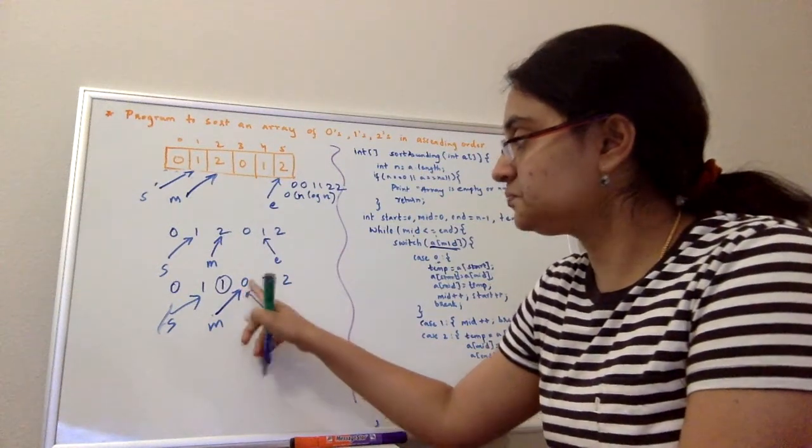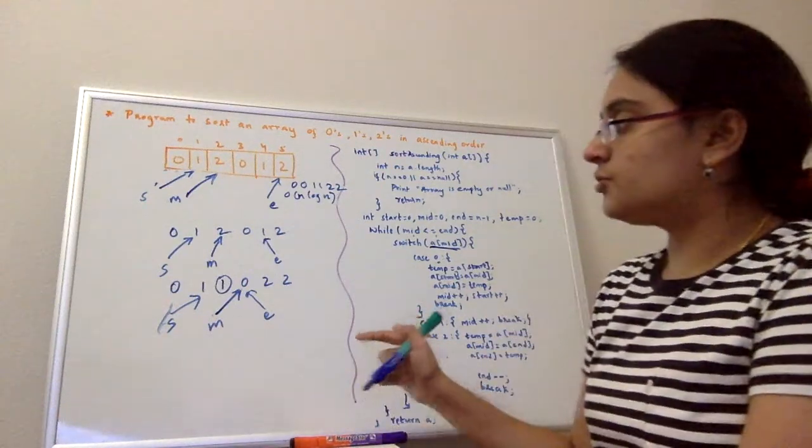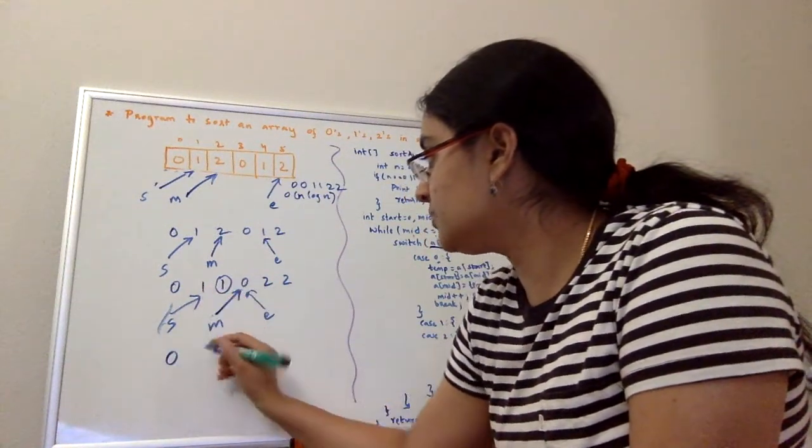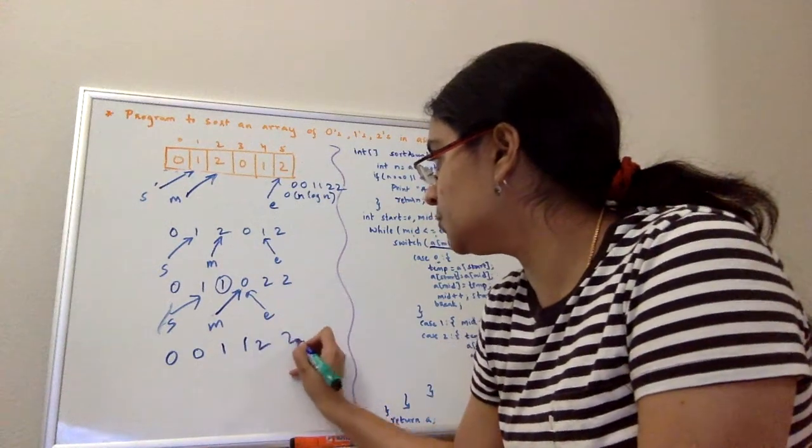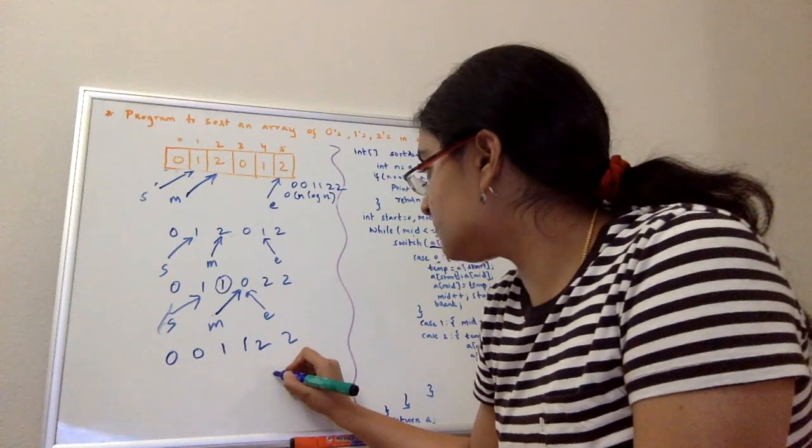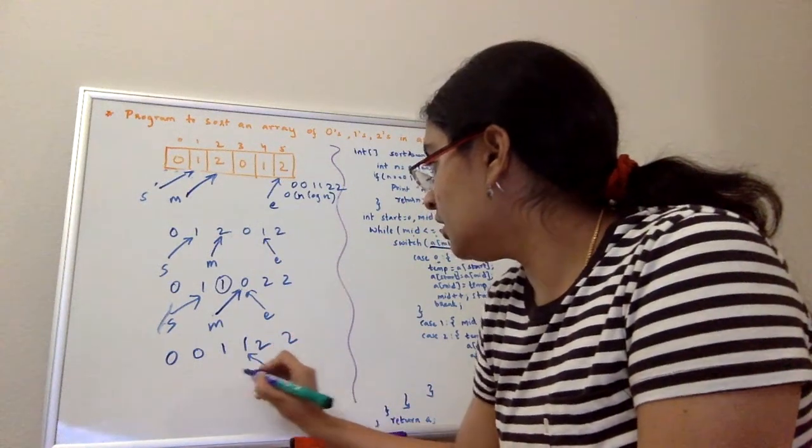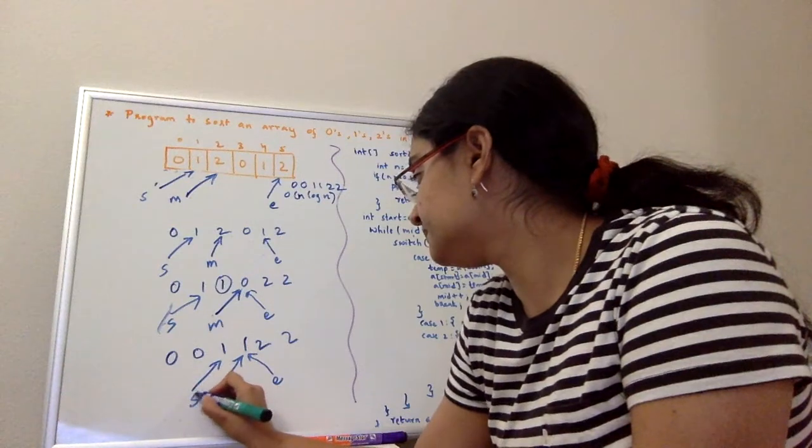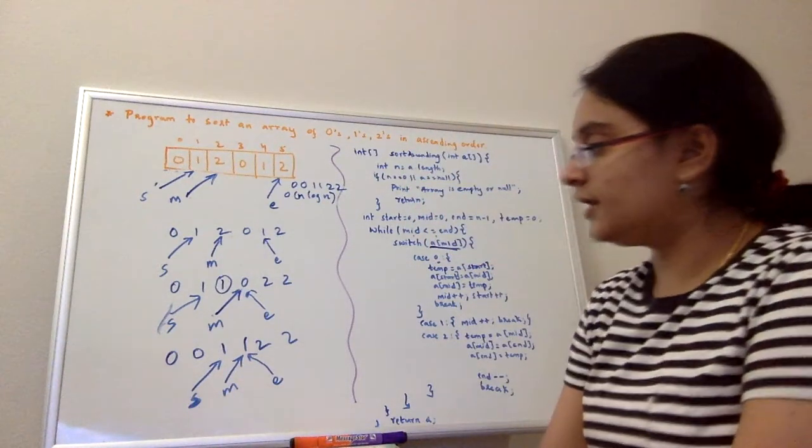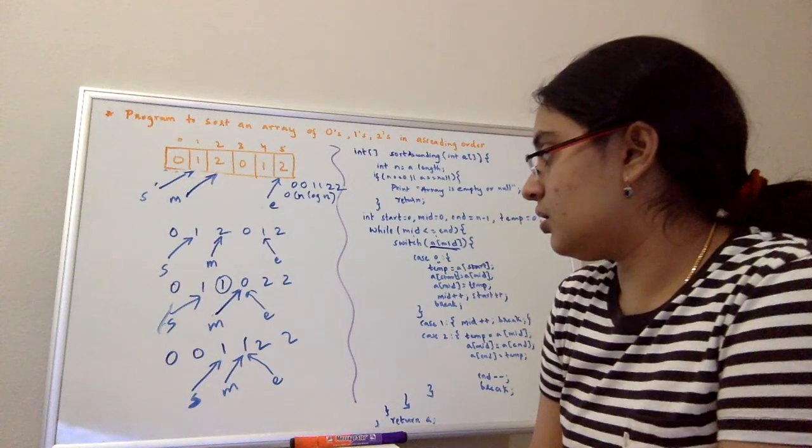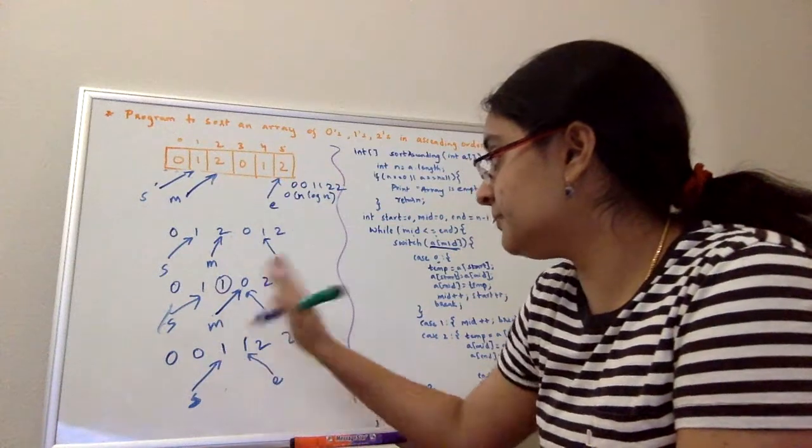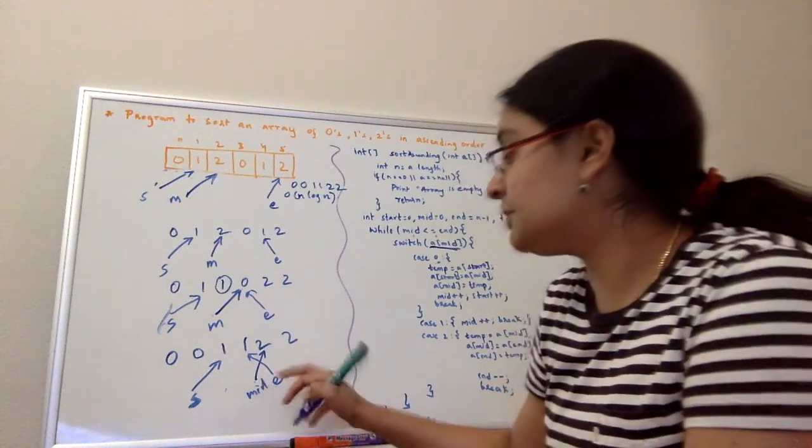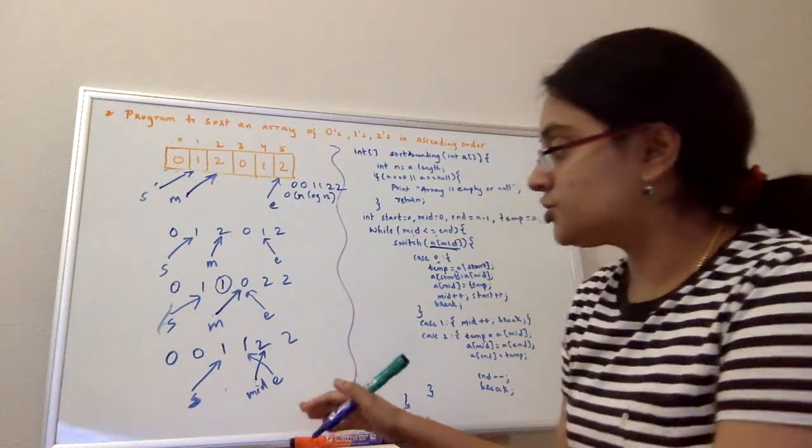When it is zero, we have to swap start and the mid pointers, right, the elements in those indexes. So our new array would be zero, zero is swapped with one. So your new array is zero, one, one, two, and two. After swapping, I'll increment the mid, so my mid is pointing here. When I check the condition, mid is no longer less than or equal to end, so I'll come out of the loop.